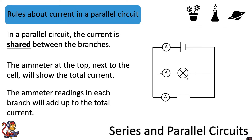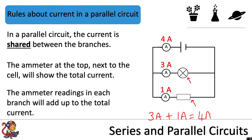In a different circuit with one lamp in the first branch and a resistor in the second branch, let's say the total current is again 4 amps. The same rule applies — the current is shared between the branches — but because it's two different components, the current is shared unequally. For example, we may have 3 amps through the first branch and only 1 amp through the second, but they still add up to equal the total current of 4 amps.